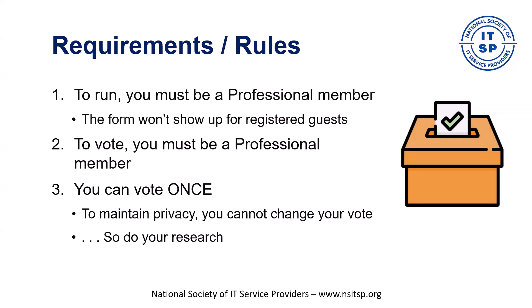In order to run, you must be a paid professional member. The form to run won't actually show up if you are not a paid member — we have some intelligence on the website to verify that. You cannot vote unless you're a paid member either. You may vote once and you can't change your vote. We track whether a member has voted or not, but not how they voted, so it remains anonymous. Do your research and know what you're doing before you click submit.